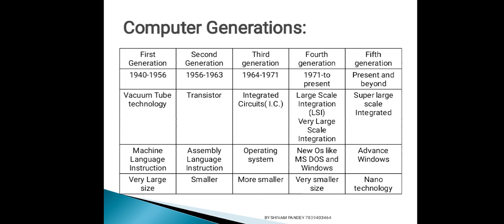Fourth generation computer में technology improve हुई — large scale integrations use होने लगे, VLSI technology use होने लगी यानि more than hundreds of thousands of transistors can be placed on a small silicon chip. New operating systems आने लगे — MS-DOS और Windows उस समय तेजी से काम करने लगे। As compared to first, second, and third generation, ये बहुत small हुआ करते थे।